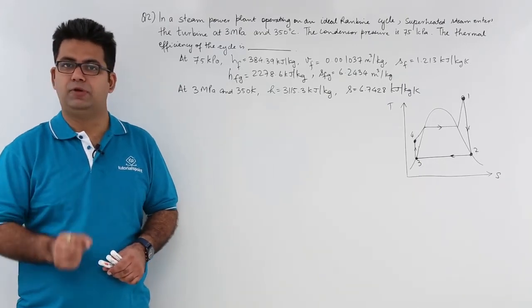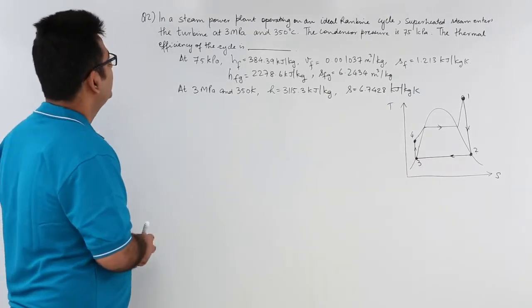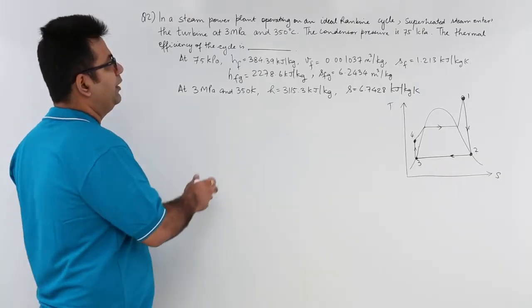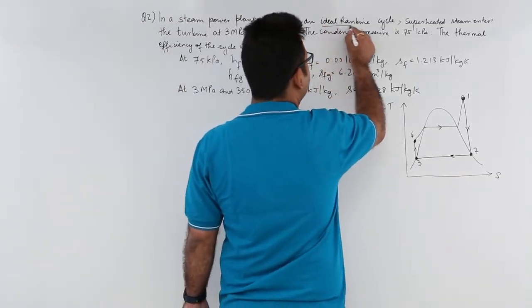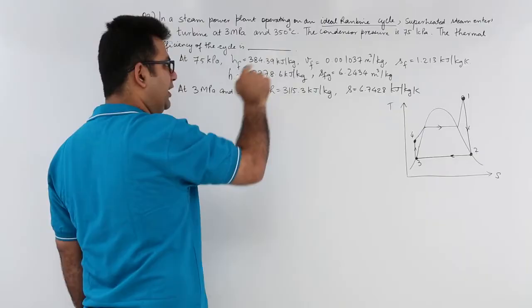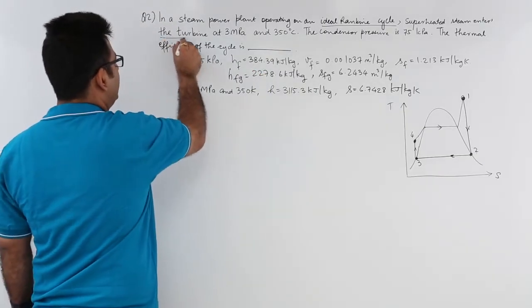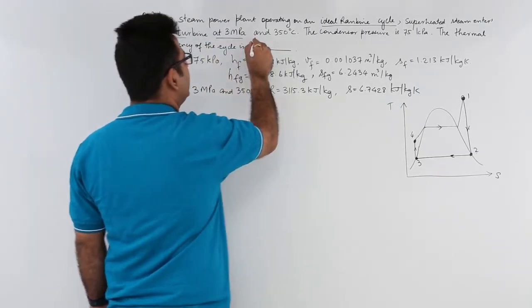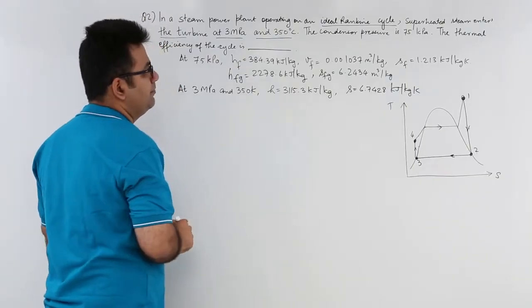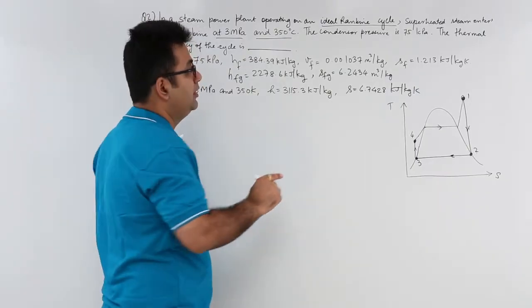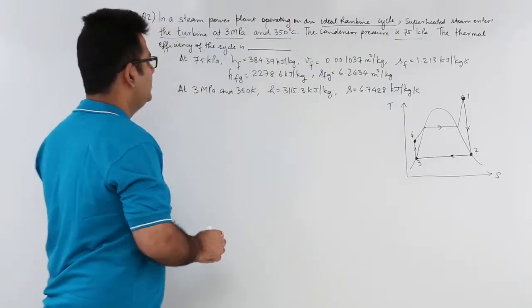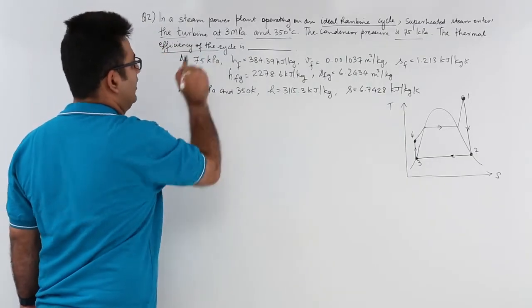Now let us look at question number 2. Question number 2 says, in a steam power plant operating in an ideal Rankine cycle, superheated steam enters the turbine at 3 MPa and 350 degree Celsius. The condenser pressure is 75 KPa. What is the thermal efficiency of the cycle?